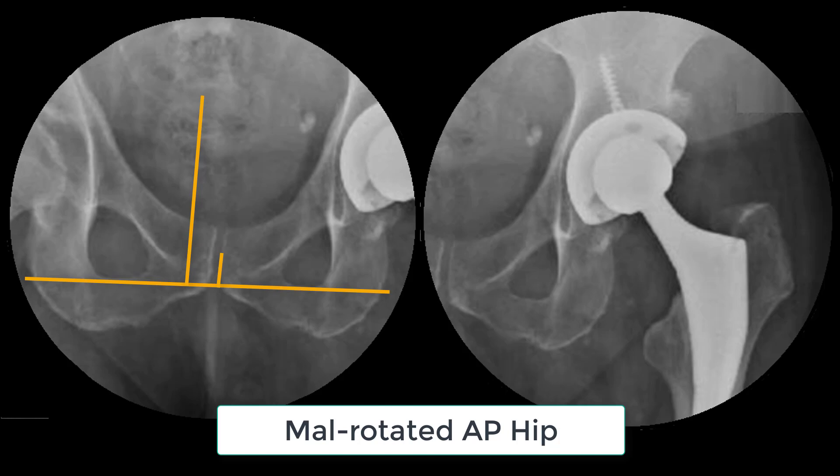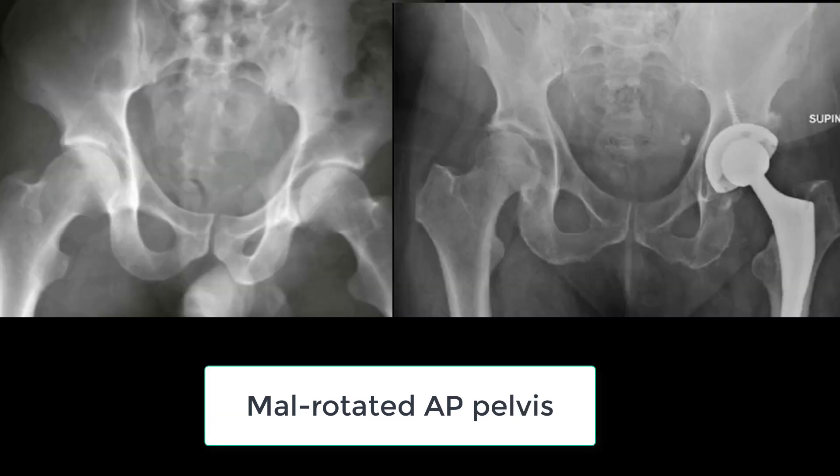For many surgeons, intraoperative x-ray is the gold standard for producing accurate placement of hip replacement implants. However, producing well-aligned intraoperative radiographs can be challenging due to rotation of the pelvis as well as changes in position of the femur in between x-rays.